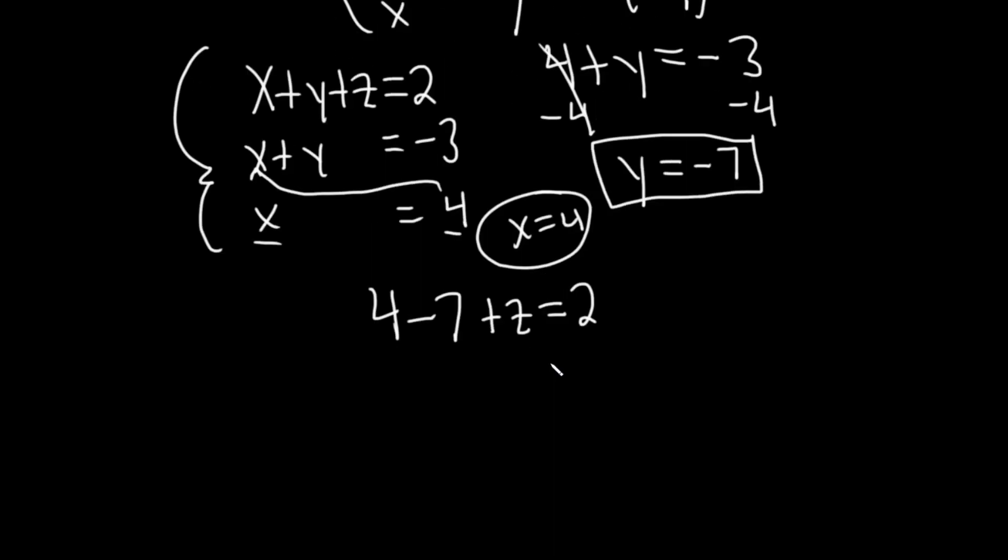And then so 4 minus 7 is minus 3. And then plus z equals 2. And then just add 3, add 3.